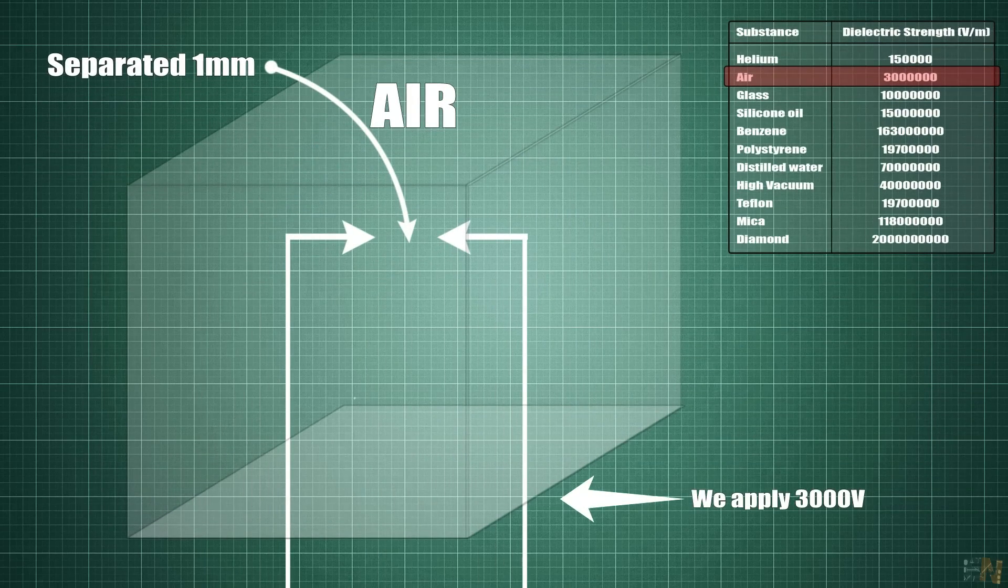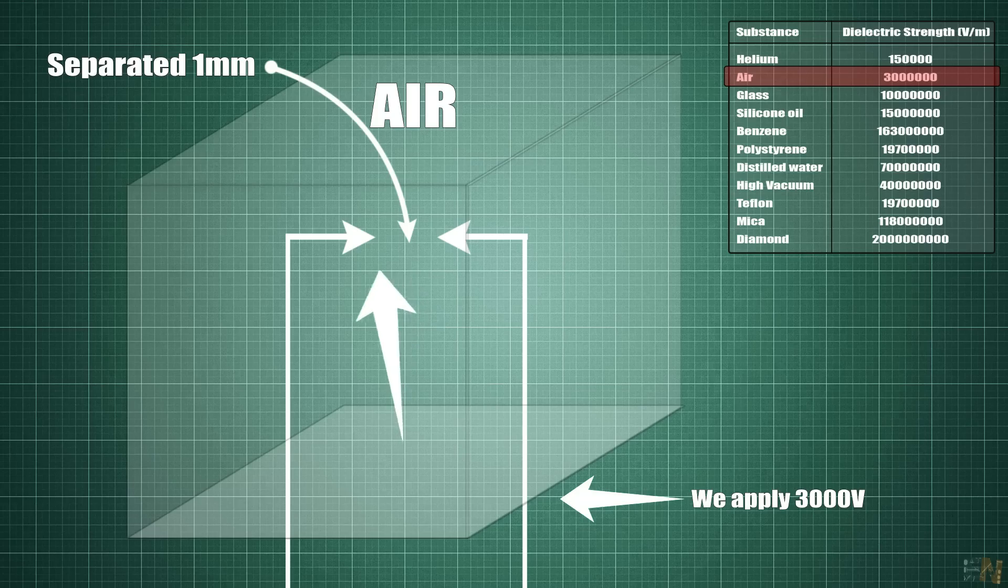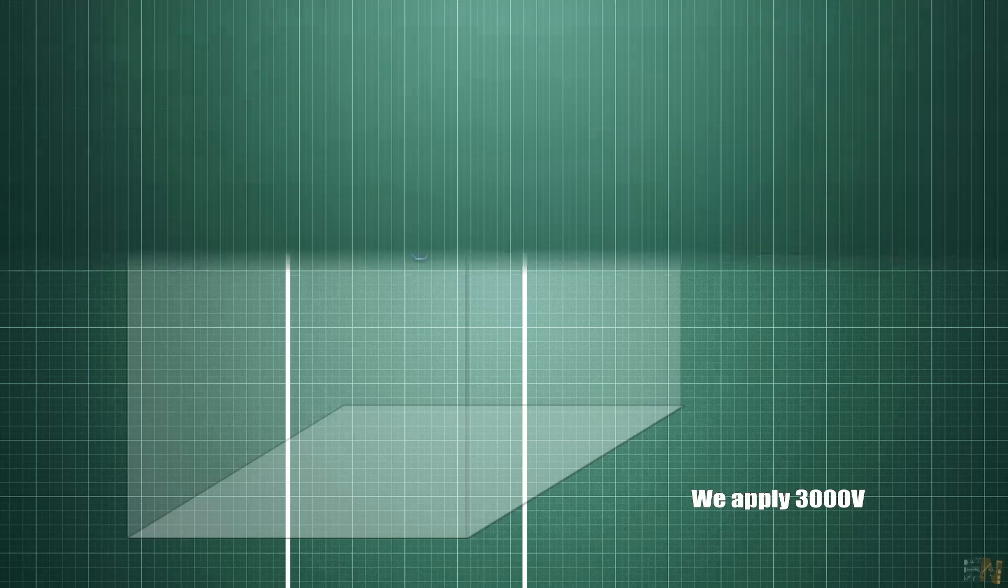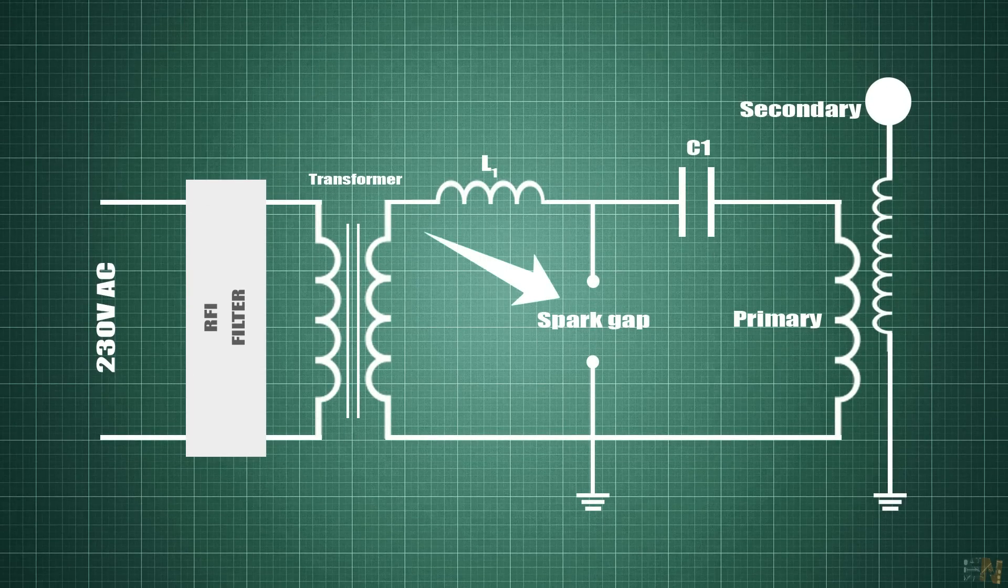So if we have two metal wires separated one millimeter one to each other and the voltage between these wires increases up to 3000 volts, electricity could now flow through the air and by breaking the air, it will glow and also create a sound. And that's how the voltage arc is created through the air.